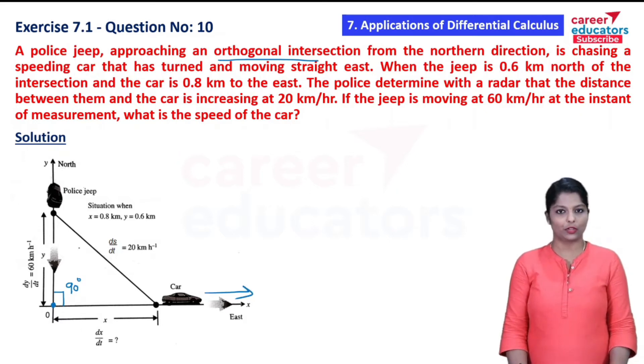The question states: When the jeep is 0.6 kilometers north of the intersection, that is y equal to 0.6 kilometers, and the car is 0.8 kilometers to the east, that is x equal to 0.8 kilometers.